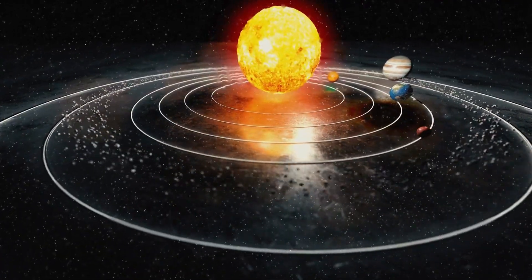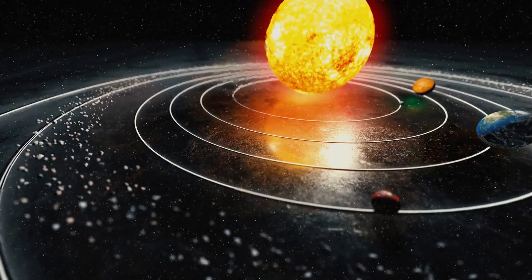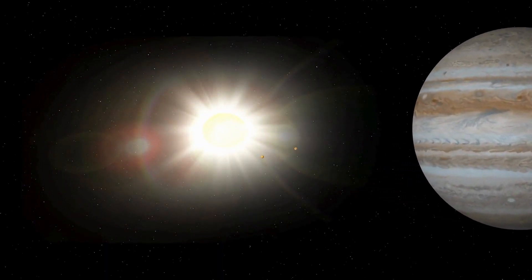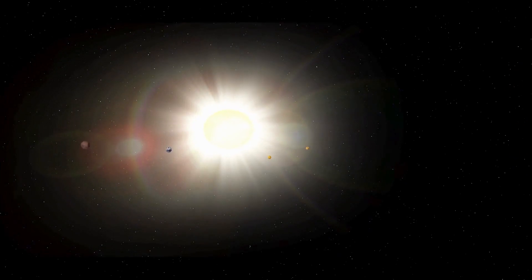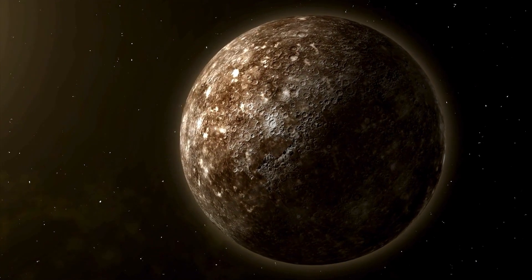Pluto's journey around the Sun is unlike any other planet in our solar system. It takes a staggering 248 years to complete a single orbit, meaning since its discovery in 1930, it hasn't even finished one full revolution. But the intrigue doesn't stop there.